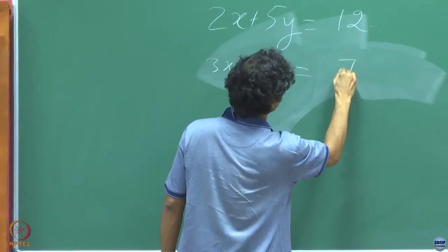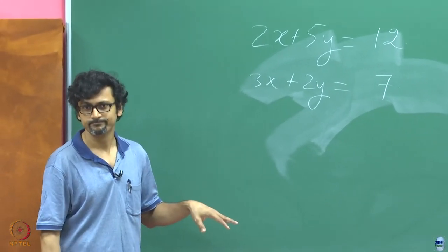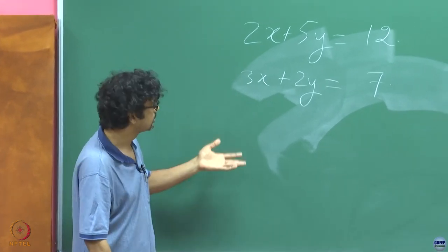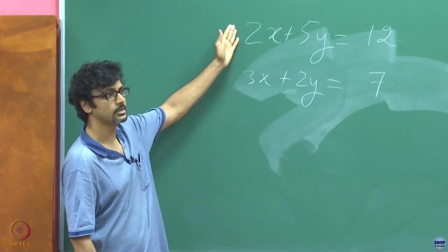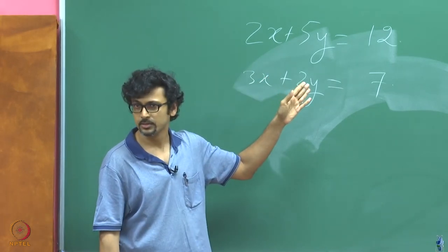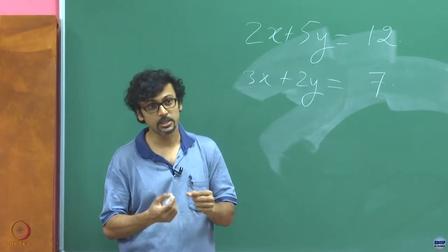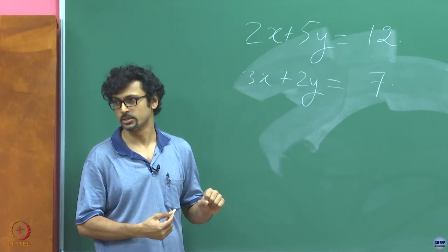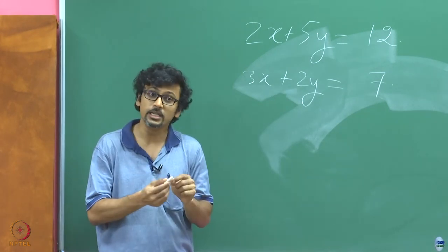You know how to solve this — there are so many methods. One method is what you learned in middle school: multiply one equation by a certain term, this one by another term, subtract one from the other, and get rid of one of the unknowns. In this course we shall give it a special name: taking linear combinations of equations. That cancellation you did was essentially a linear combination.